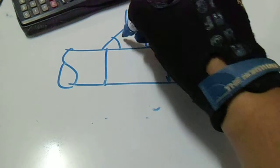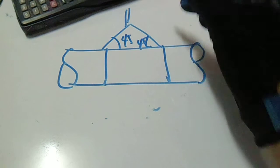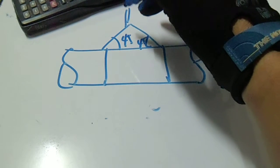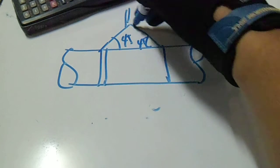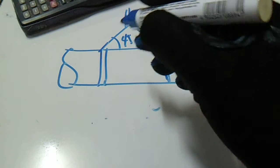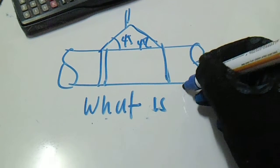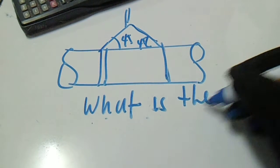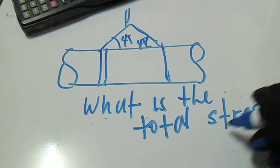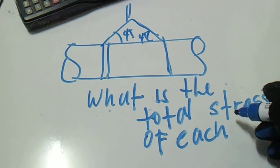So this is 45 degrees and this is also 45 degrees, we have two 45-degree angles. To get the stress of the string and sling, the question is: what is the total stress of each sling?